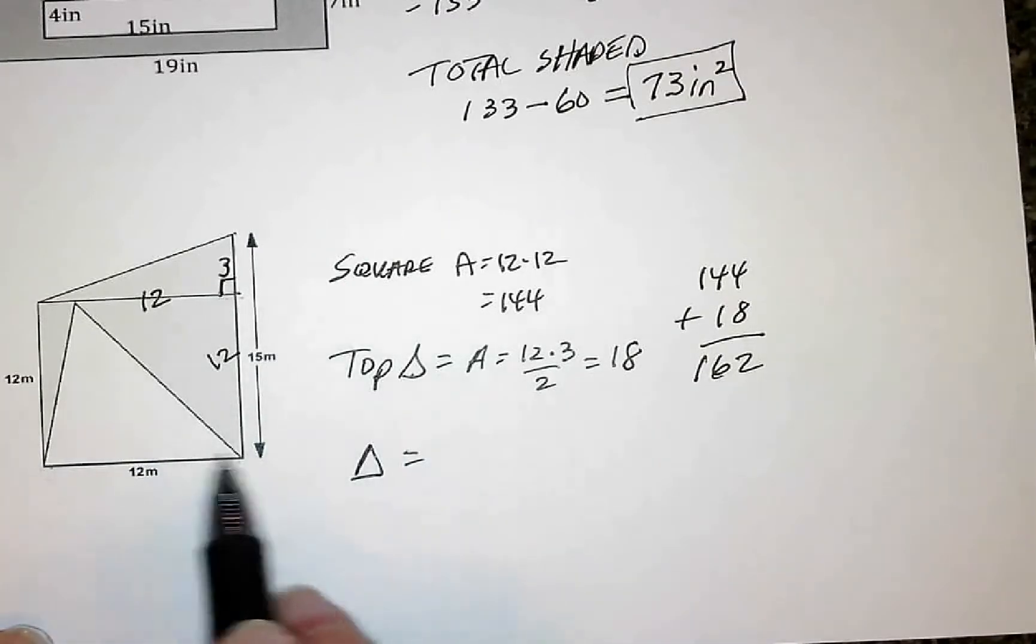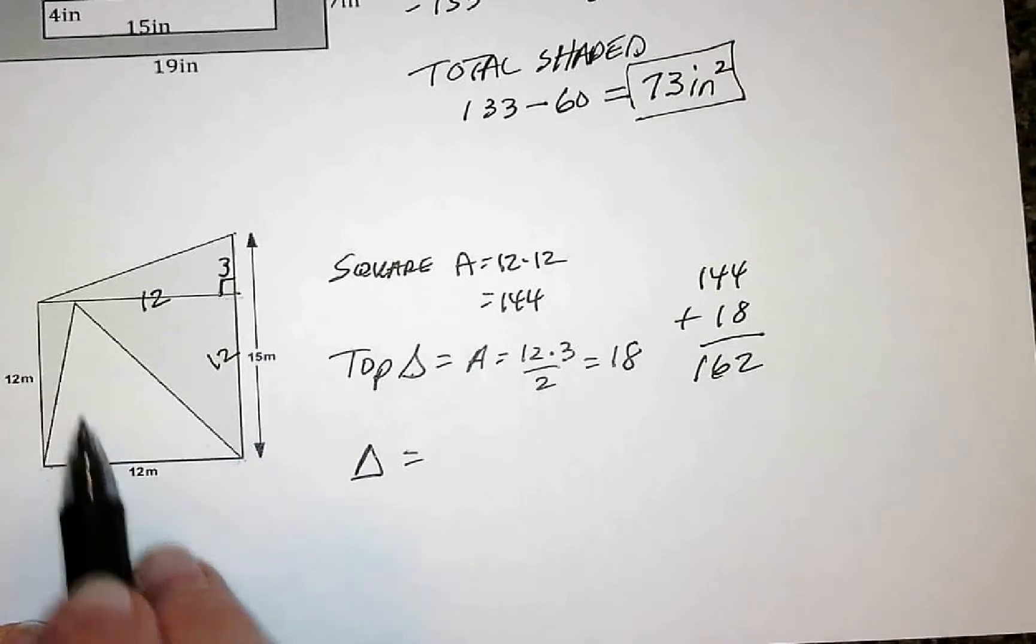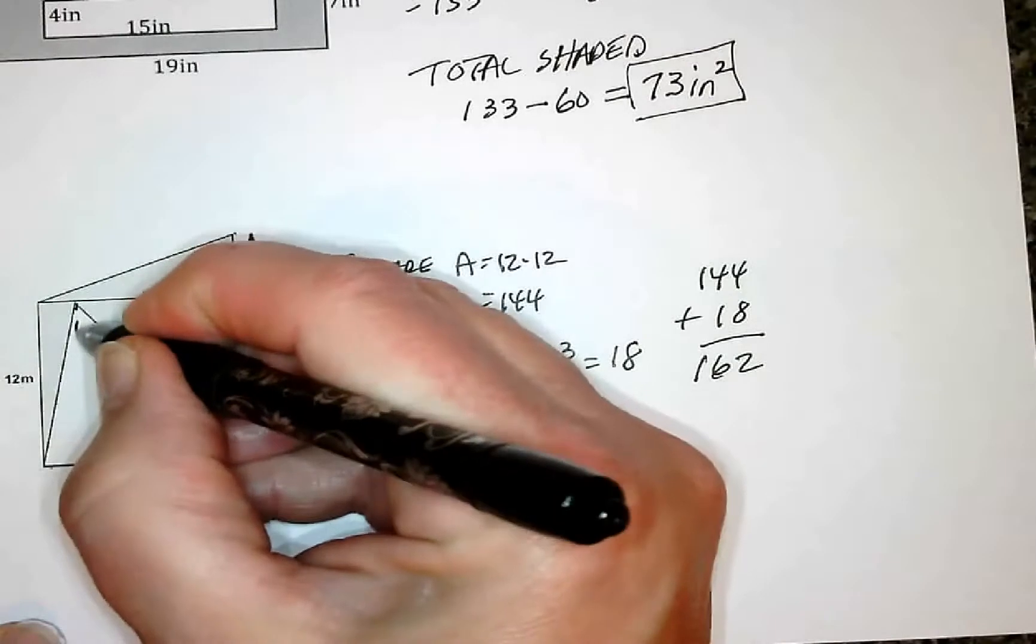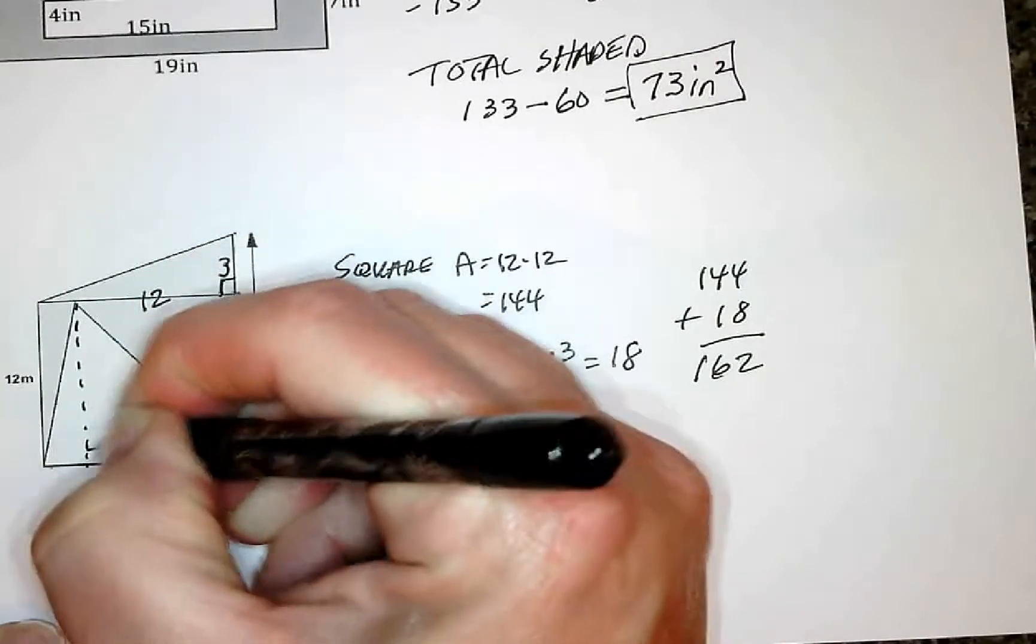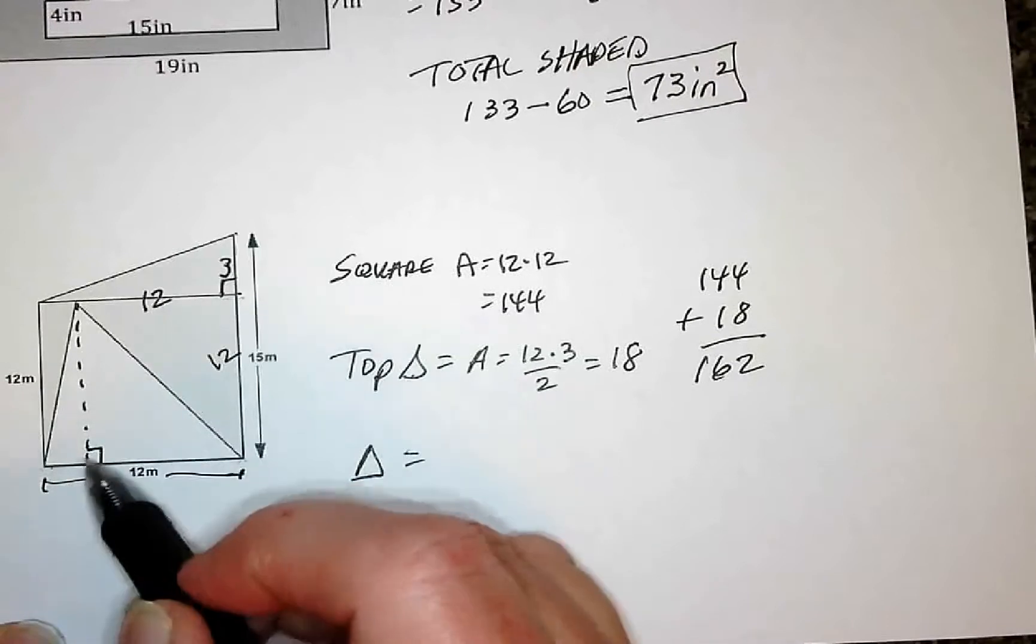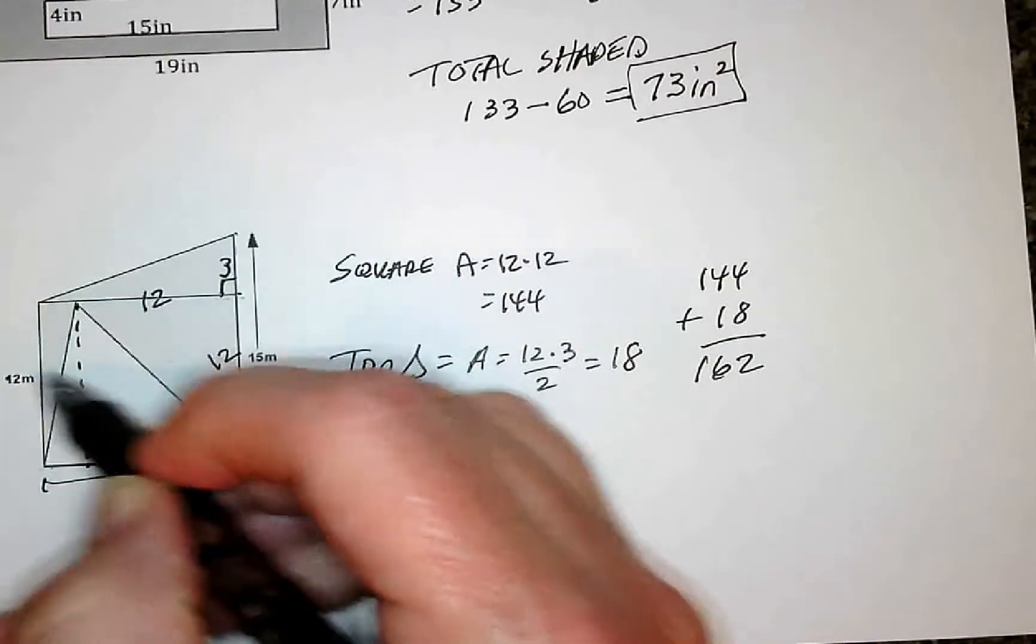So I can pretty easily see that this is the base, and then the height is always straight up and down. It's not going to be one of these slanted ones. It's going to be coming straight down here because the base and the height have to form a right angle. So this base is 12,